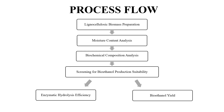Now let's look into the process flow. The process starts with lignocellulosic biomass preparation of three different mango varieties: Harum Manis, Chokanan, and Sunshine, followed by moisture and biochemical composition analysis. As a validation step, the screening of bioethanol production suitability is conducted, whereby the enzymatic hydrolysis efficiency and bioethanol yield are evaluated.